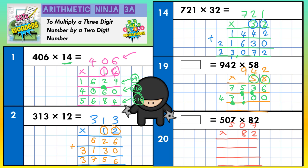And then just add everything together. 6 add nothing is 6, 3 add nothing is 3, 5 add 1 is 6, 7 add 7 is 14 — put the 4 in, carry the 1. 4 plus 1 is 5. Final answer: 54,636.